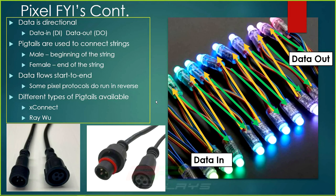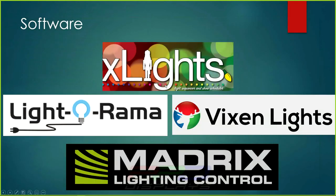Pigtails are used to connect one string to another. Looking at pigtails, there's a male end with a metal tip and a female end with holes that match up. The male end is where the beginning of the string is located, and the female end is the end of the string where data flows out. So the male end is where data flows in from the controller, and the female end is where data flows out.